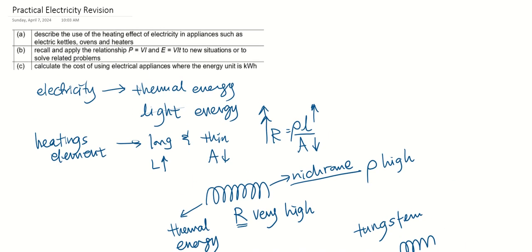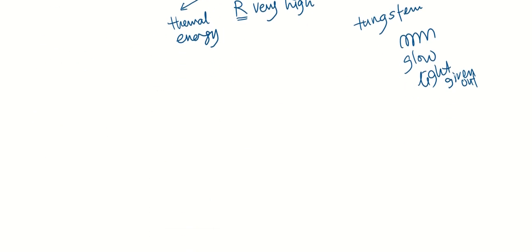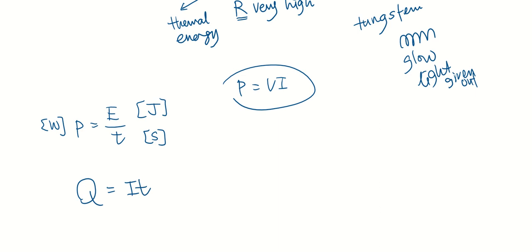For part B, recall and apply the relationship P equals VI and E equals VIt. We have learned in a previous chapter power equals to energy over time. This energy has an SI unit of joules, time is seconds, power is watt.